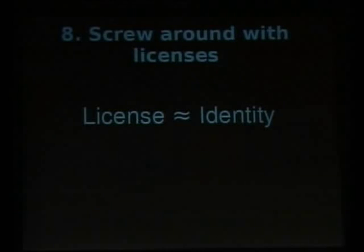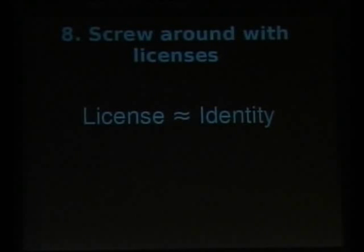We're back to psychological techniques. One of the important things to understand about open source geek psychology is that open source contributors and communities tend to attach a lot of importance to software licenses. Therefore, if you've gotten this far and you still have a bunch of people hanging around and insisting on contributing, keep changing the license of your project.